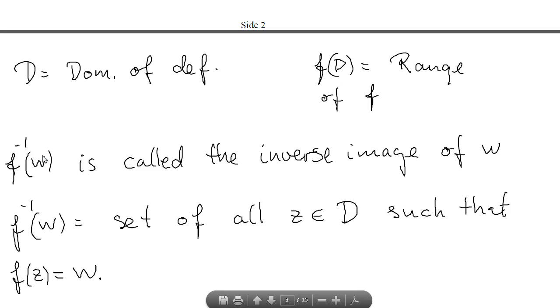The inverse image of some point w is the set of all points z in the domain of definition such that f of z equals w. In the case when the function is one to one, then this inverse image consists of only one point.